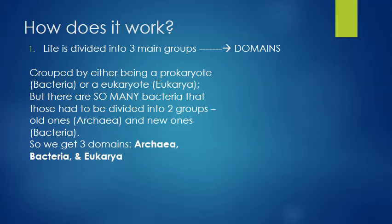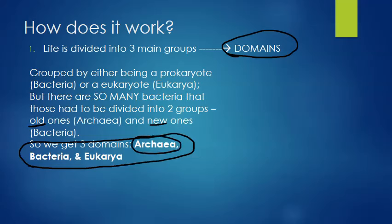At first they were grouped by either being a prokaryote, which is a bacteria that has no nucleus, or a eukaryote, which is everything else that has a nucleus. But there are so many bacteria that they decided to divide the bacteria into two groups: Archaea, which means old, and then new bacteria, which is just regular bacteria or sometimes called eubacteria. So in the end we ended up with three domains: Archaea, Bacteria, and Eukarya.